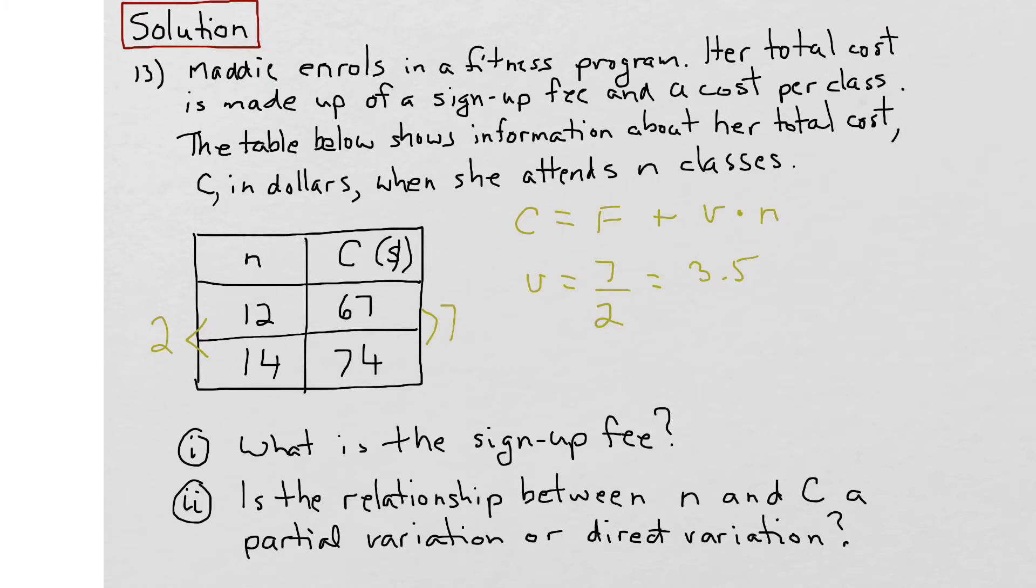This means that Maddie is paying $3.50 every time she goes to fitness class. And we can substitute this value for V into the original equation, so our equation then becomes C equals F plus 3.5n. And we're asked to find the sign-up fee, which is given by F, so we can substitute values for C and n into this equation and solve for F. We can go over to our chart here, and we can see it doesn't matter which line we take. Let's try it.